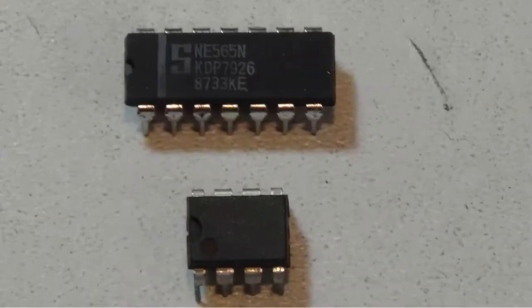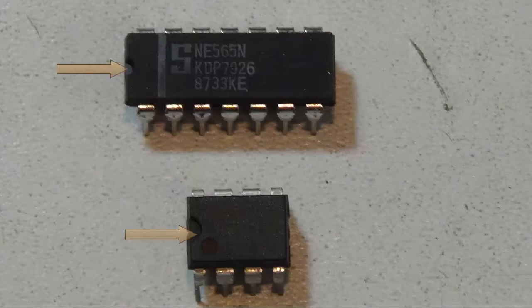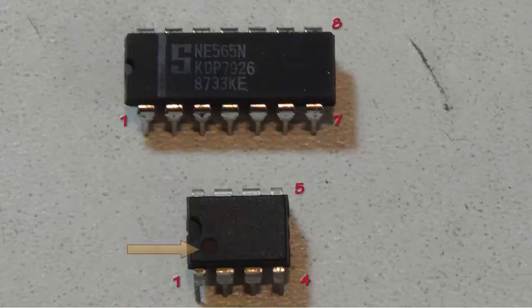Here we have two ICs. I always put the notch to the left side and then the lower left corner is always pin number 1. You'll notice on the 8-pin IC there's a little circular indentation. That also will identify pin 1 on the IC chip.